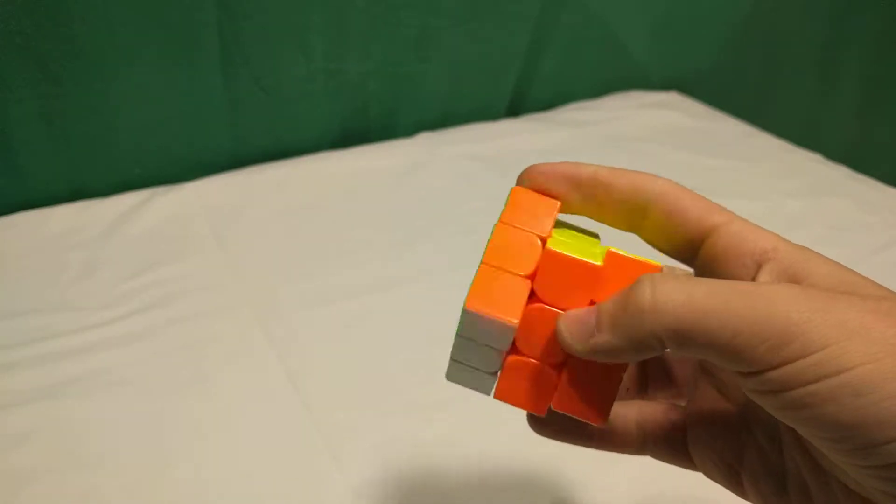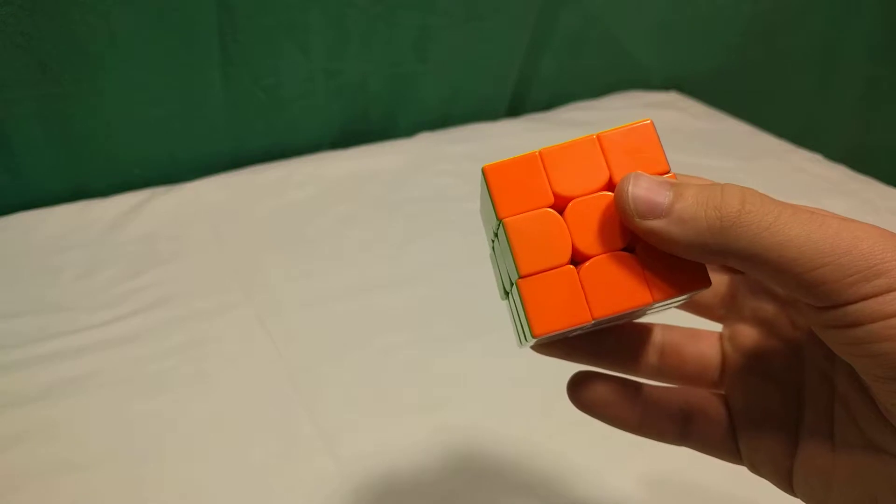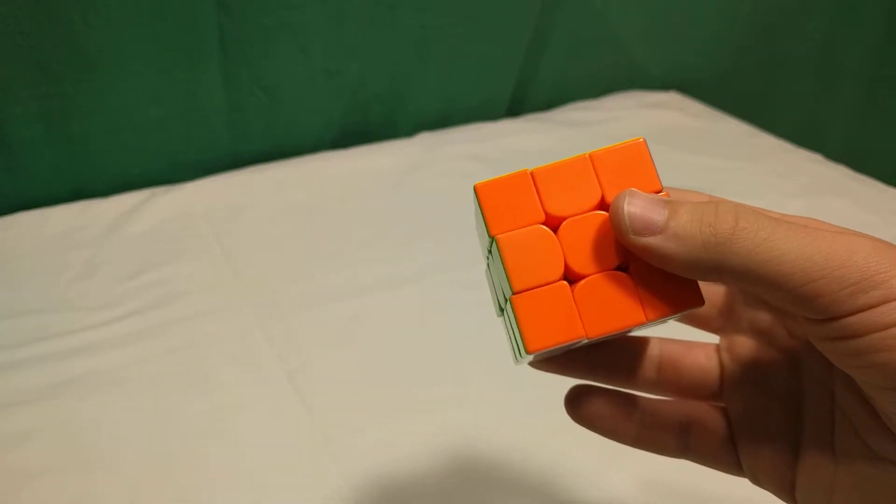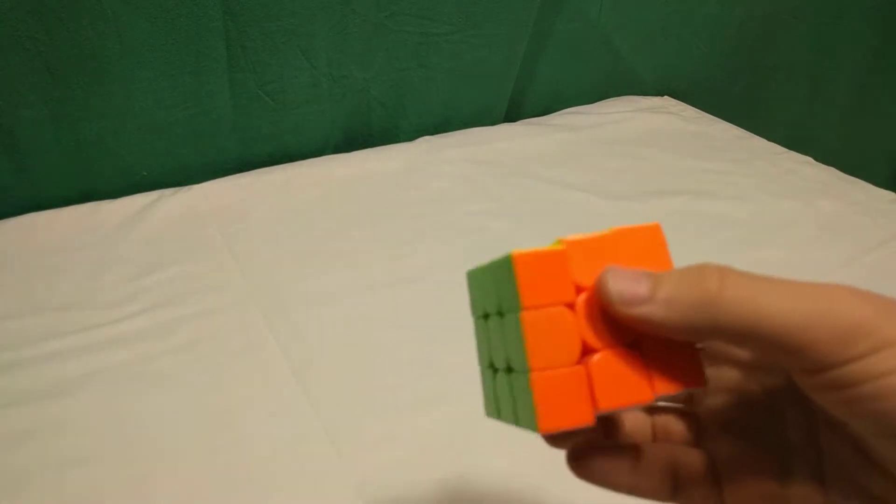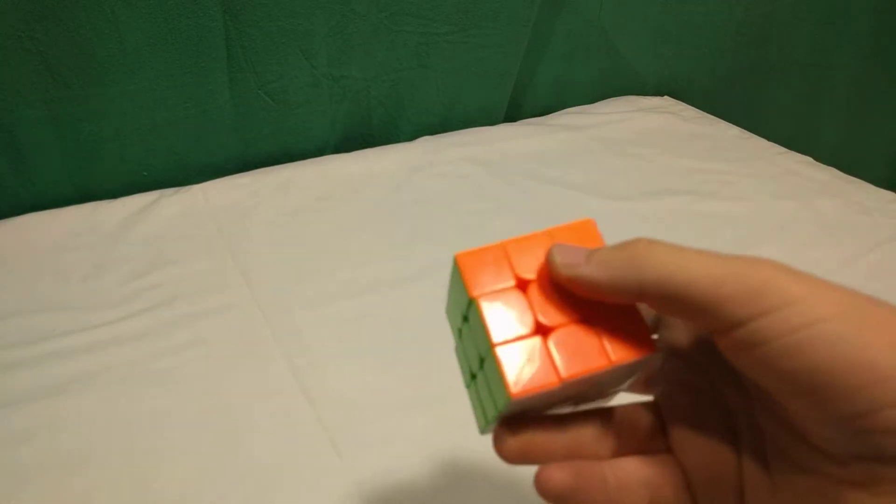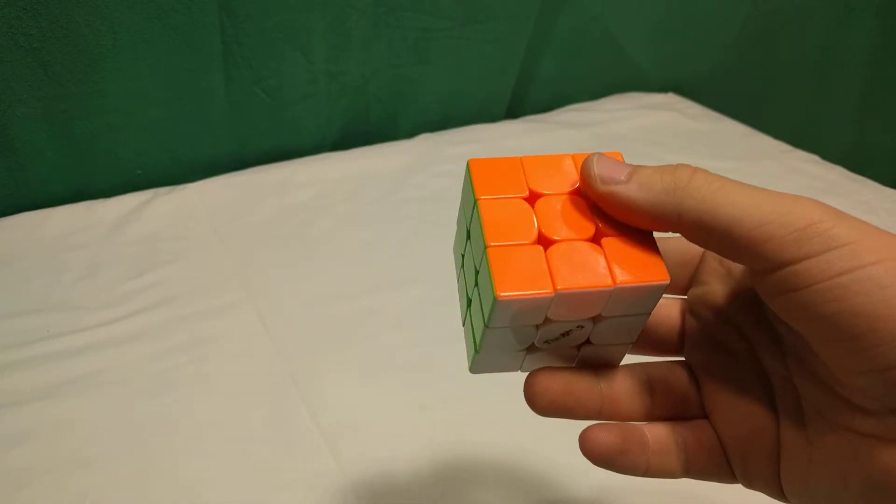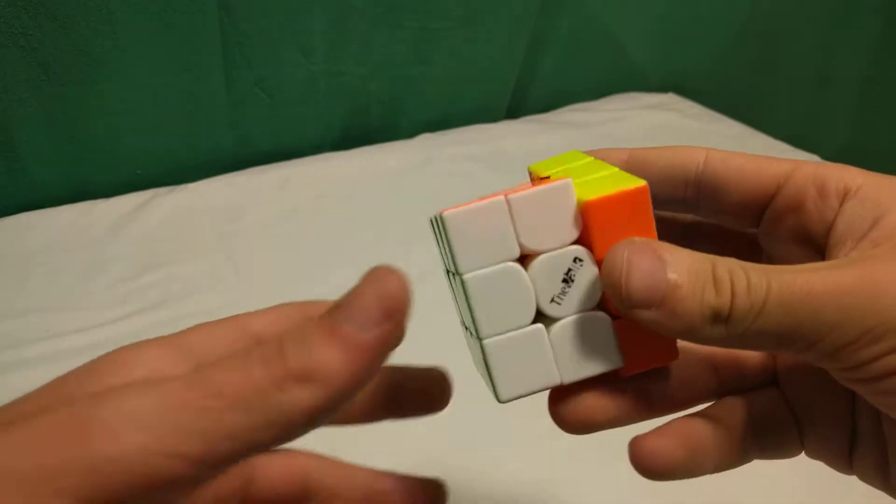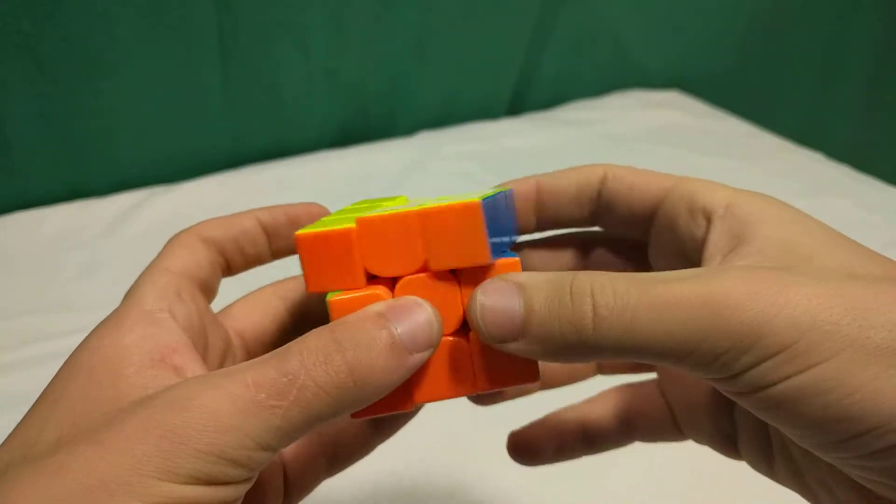So it's either the GTS2, GANS Air Ultimate M. The GANS names are getting so long nowadays. GANS 356 Air Ultimate and magnetized, right? I hear that's a good cube. I've not used it.